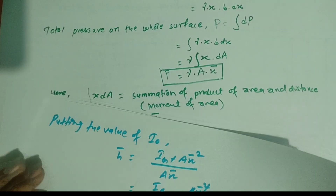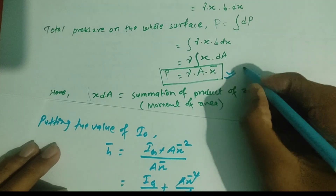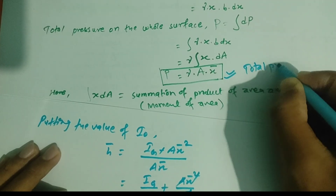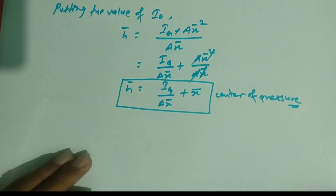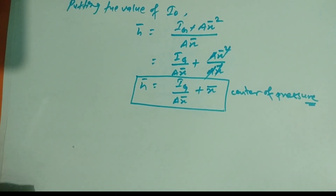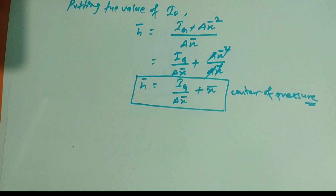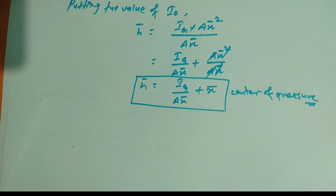So these are the two relations we derived: total pressure P = γ·A·x̄, and center of pressure S̄ = Ig/(A·x̄) + x̄. In this way we can derive the relations for total pressure and center of pressure for a vertically immersed surface. If there is any confusion, please comment in the comment section. If you like the video, like and share it, and do not forget to subscribe to the channel. Thank you.